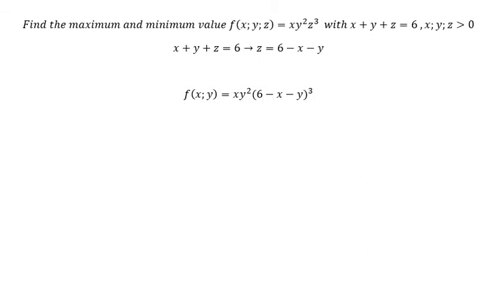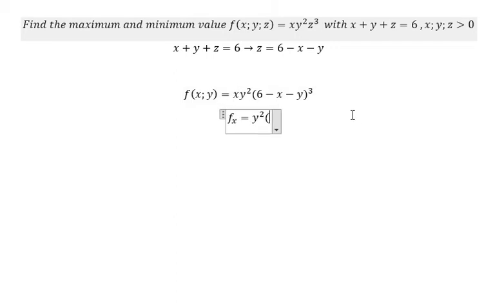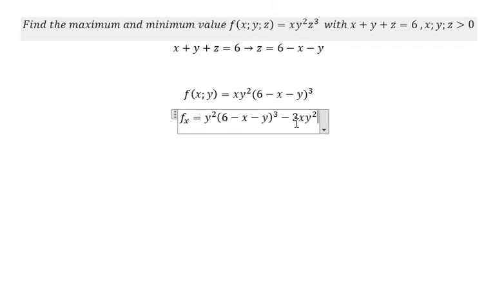We need to find fx — the first derivative of the function with respect to x. In this situation, x is the variable and y is treated as a constant. So we get y² times (6 minus x minus y) to the power of 3. Then we take the derivative of that term, bringing down a 3 and a negative sign, giving us negative 3xy² times (6 minus x minus y) to the power of 2.